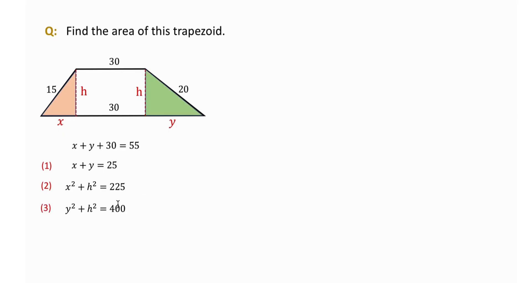Similarly, the right triangle gives us y squared plus h squared equals 400. We subtract equation 3 from equation 2 to eliminate h squared, and this gives x squared minus y squared equals negative 175.